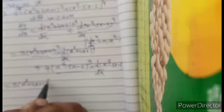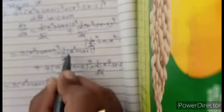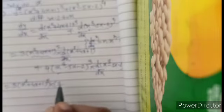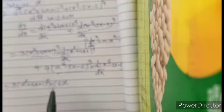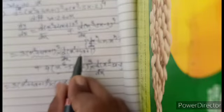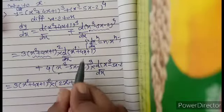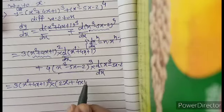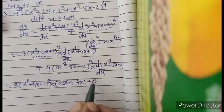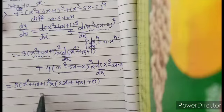So the expression becomes 3·(x² + 4x + 1)² multiplied by the derivative of (x² + 4x + 1). Using x^n again: derivative of x² gives 2x, derivative of 4x gives 4·1 equals 4, and derivative of constant 1 is 0. Plus 4·(x³ - 5x - 2)³ multiplied by the derivative of (x³ - 5x - 2), where derivative of x³ gives 3x², and derivative of 5x gives 5·1, and derivative of constant 2 is 0.